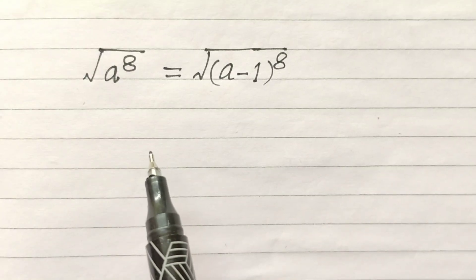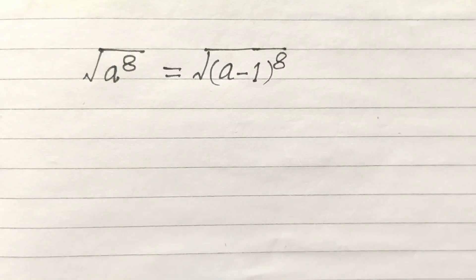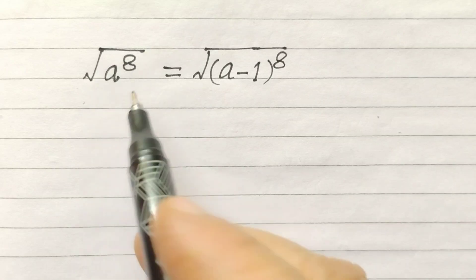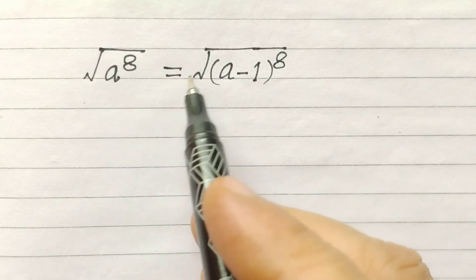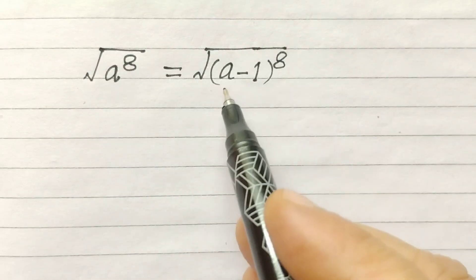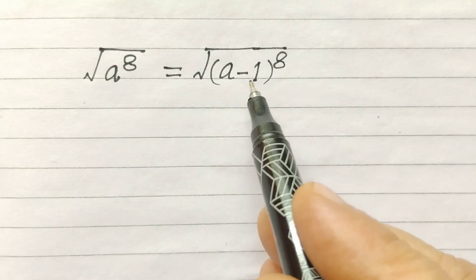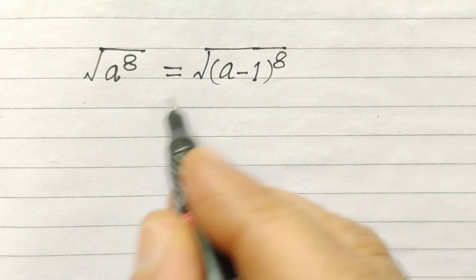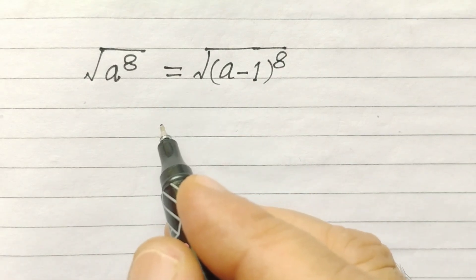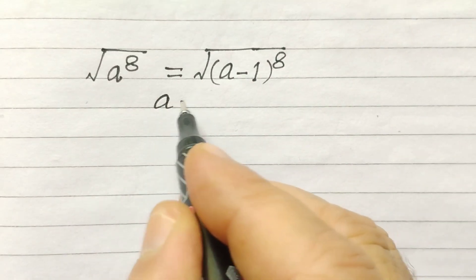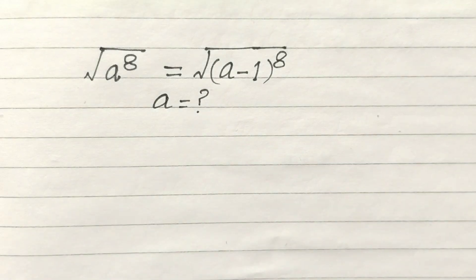Hi friends, welcome back to my channel. Today we have the equation: square root of A to the power 8 equals square root of A minus 1 to the power 8. So we have to solve this equation — we have to find the value of A.